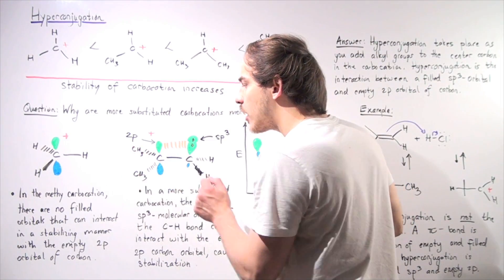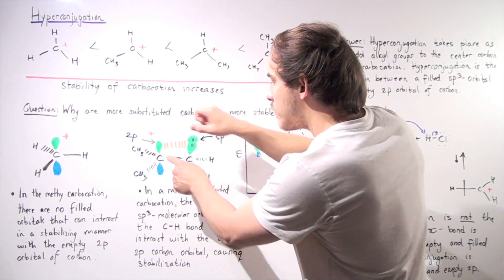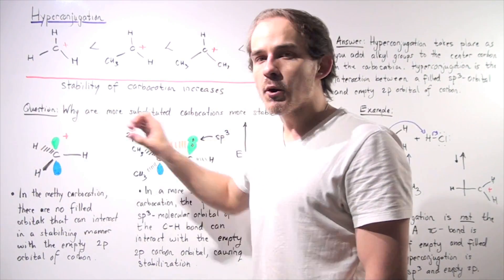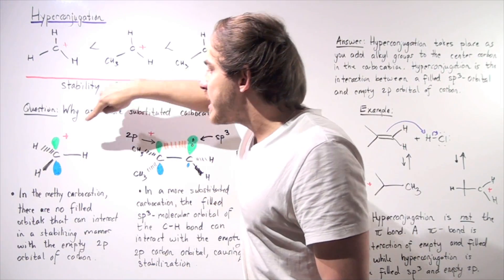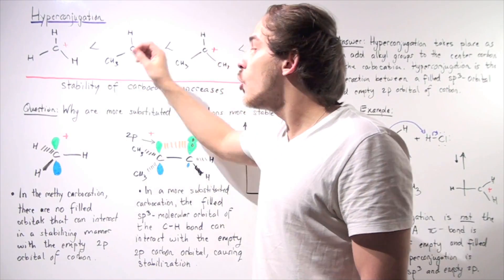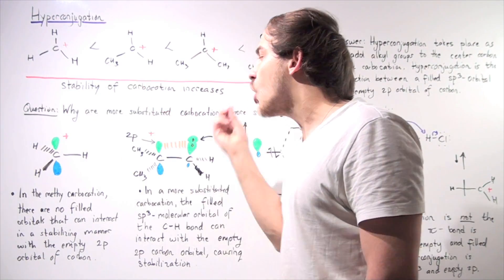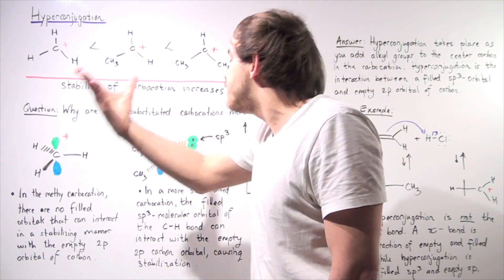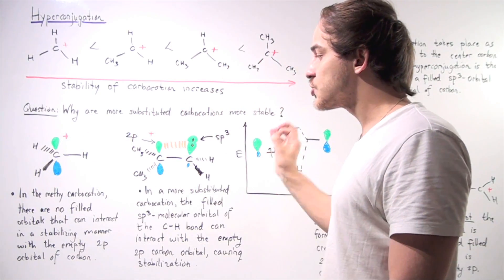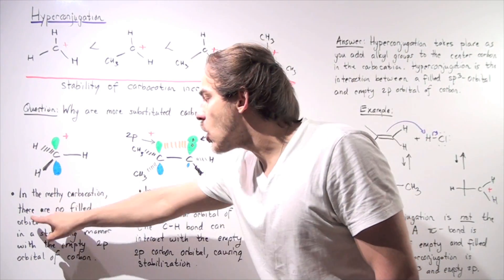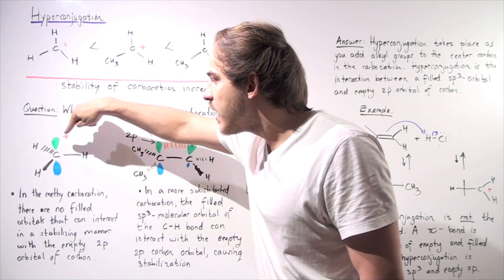The same is true for the other carbons: the carbon-H bond here is able to interact with the empty 2p orbital here. Now let's examine our methyl carbocation. In the methyl carbocation, we do not have that same interaction. The central carbon is sp2 hybridized and has a full charge on its empty non-bonding 2p orbital, but we don't have those carbon-H bonds with filled sp3 orbitals that are able to interact in this stabilizing manner.